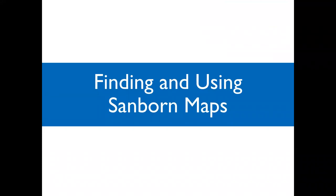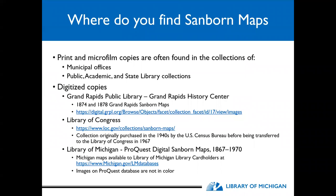When it comes to finding and using Sanborn maps, you can find both print and microfilm copies often in the collections of municipal offices, as well as public, academic, and state library collections. For example, we have a collection of Sanborn microfilms here at the Library of Michigan. If you're looking for digitized copies focusing on Grand Rapids and the surrounding Michigan area, you can start with the Grand Rapids Public Library and the Grand Rapids History Center. They have digitized some of their maps, including early ones from 1874 to 1878.